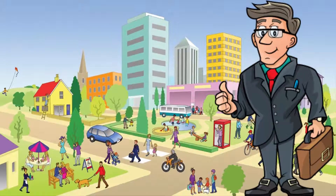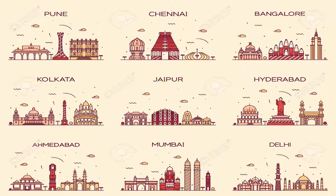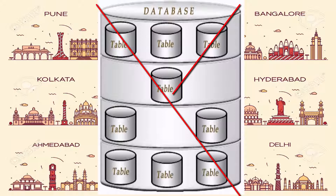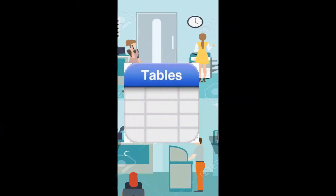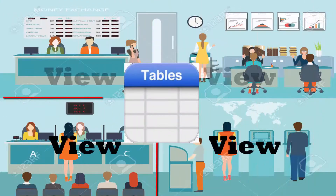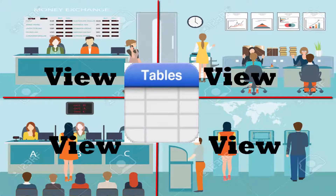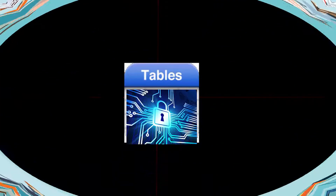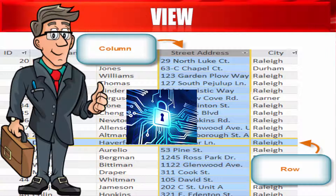For example, the branch manager of Mumbai can see only Mumbai data, not any other. For this kind of requirement, you don't need to create separate database tables for all branches. You only need to create a View for each branch on the customer table and give access to the respective branch managers. This means using a View, you can provide an additional level of table security by restricting access to a specific set of columns and rows of a table.